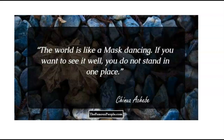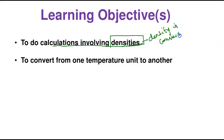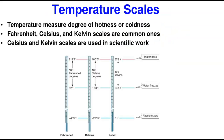The two learning objectives we want to address today are: number one, we understand what density is and do calculations involving density — we'll be doing calculations involving density and we're going to know that density is actually a conversion factor. Number two, we talk about temperature and how to convert from one temperature measurement to another. We're actually going to deal with temperature first.